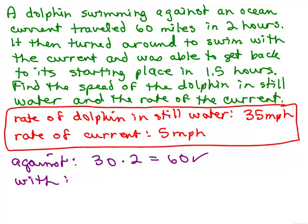he turned around and if the dolphin's rate was 35, we're going to have to add 5 this time because he gets a little boost. So the dolphin going through the water is really going at 40 miles per hour and he's going for 1 and a half hours, right,